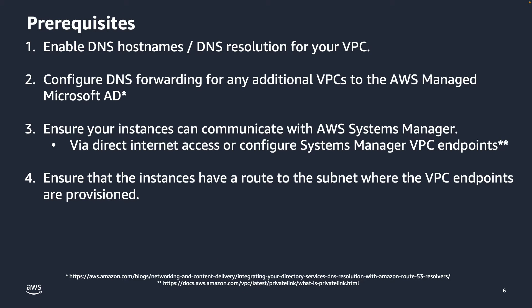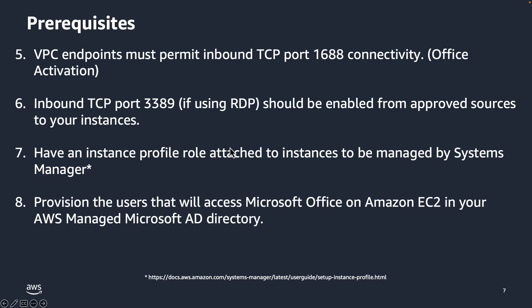Step three: ensure your instances can communicate with AWS Systems Manager — either via direct internet access if your instances are in a public subnet, or by configuring Systems Manager VPC endpoints. Step four: ensure instances have a route to the subnet where VPC endpoints are provisioned. VPC endpoints must permit inbound TCP port 1688 for Office activation, and EC2 instances must allow inbound TCP port 3389 for RDP — only from approved sources.